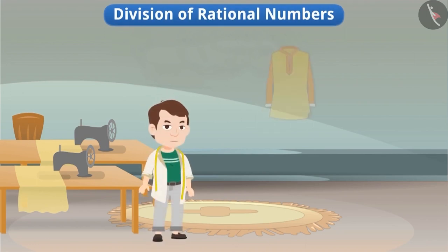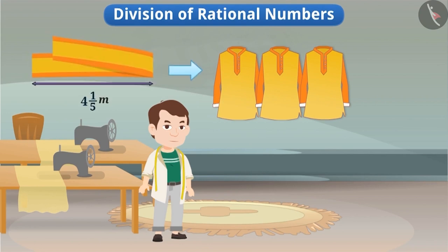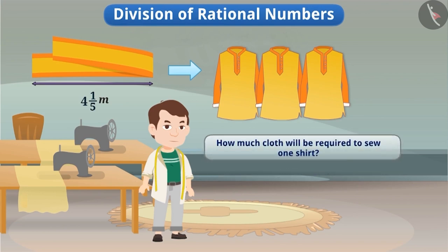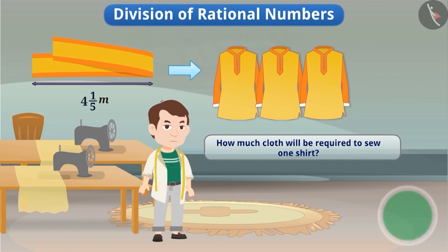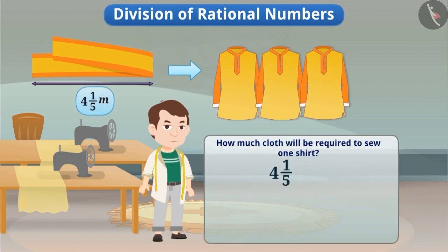Suppose a tailor uses four and one-fifth meter of cloth to sew three identical shirts. If we had to find out how much cloth he took to sew one shirt, we will divide four and one-fifth meter by three.